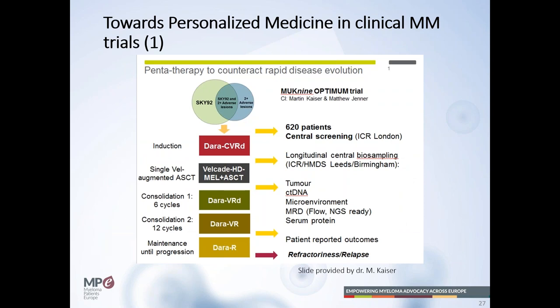What do we do now with the SKY92 or translocation status? We still don't know exactly what will help the patient with a SKY92 positive risk signature. For translocation 4-14 and deletion 17p, one clinical trial found that giving patients two times the high-dose melphalan and stem cell transplantation results in a better prognosis, potentially comparable to patients without those chromosomal aberrations. That was one of the first usable methods in which chromosomal aberrations were used to treat patients differently.